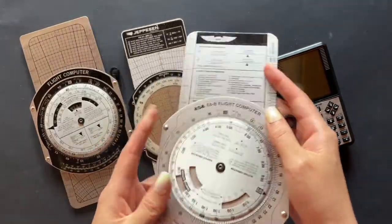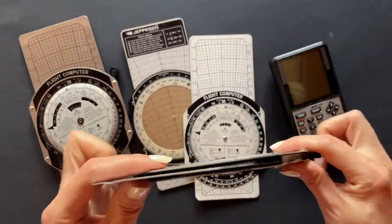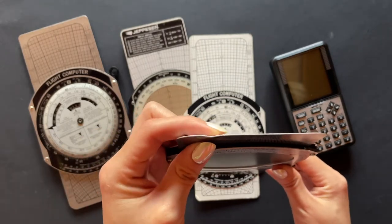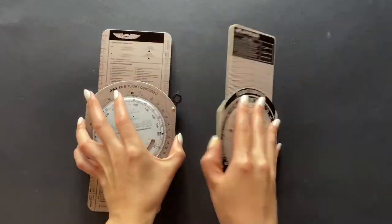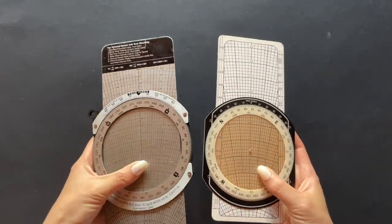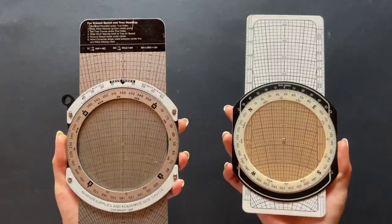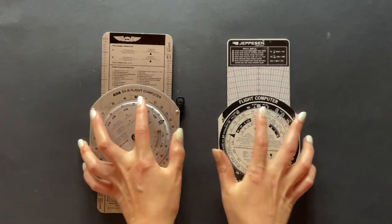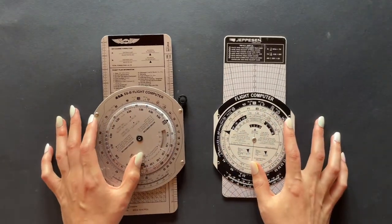Speaking of more durable, how on earth did I still manage to bend this? Anyways, this is the side of the manual calculators that are used for making the wind calculations. When using these to solve this type of question, check to see which brand of E6B you have.